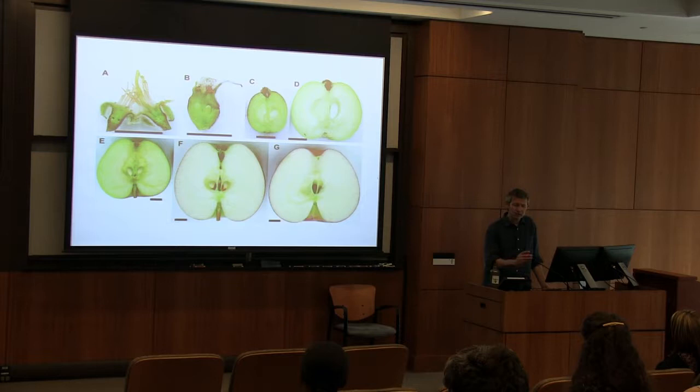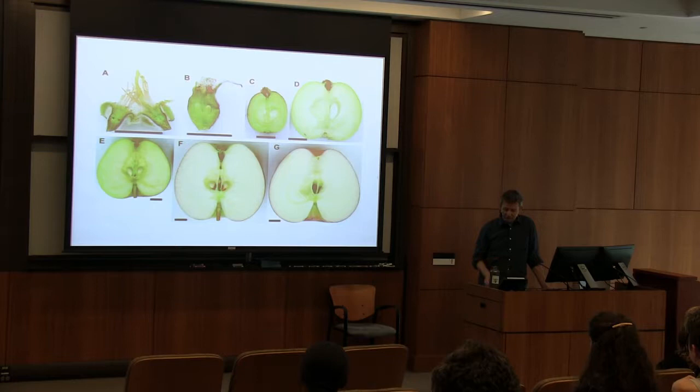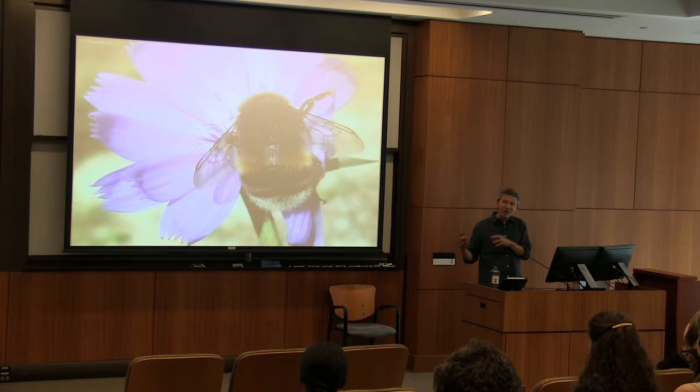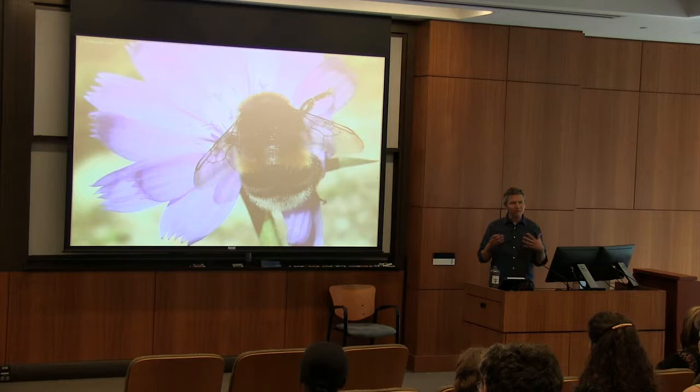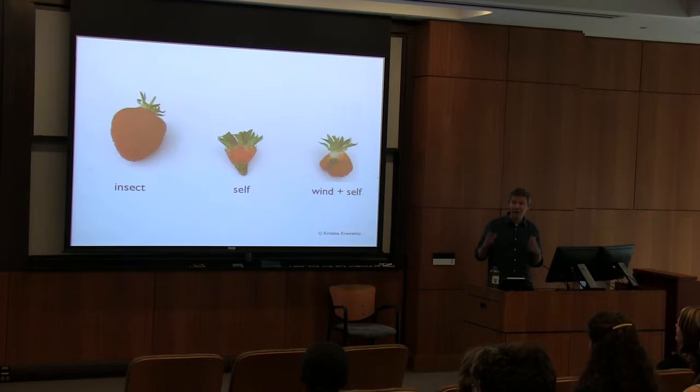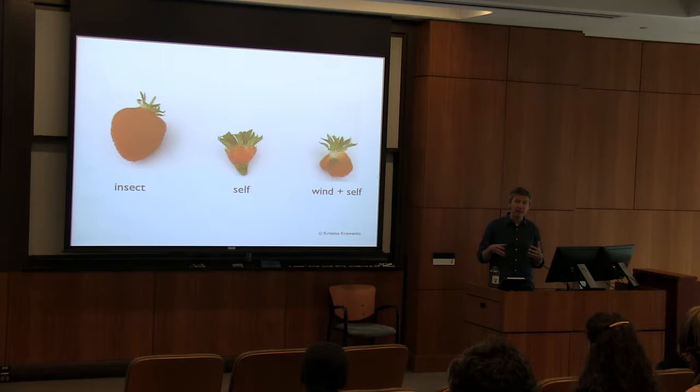This is a really critical step in the reproduction of essentially all flowering plants. Looking across the flowering plant lineage, about 10% of plants rely on the wind to transfer pollen between flowers. The other 90% of flowering plant species actually rely on an animal pollinator to carry pollen between flowers to allow fertilization to happen. I hope you got a sense from that apple picture of why that might be important.